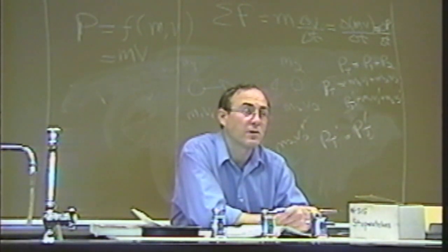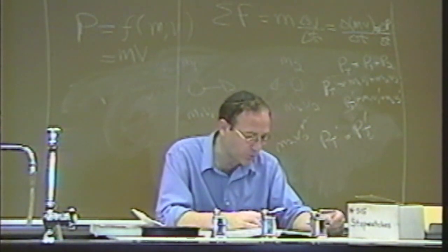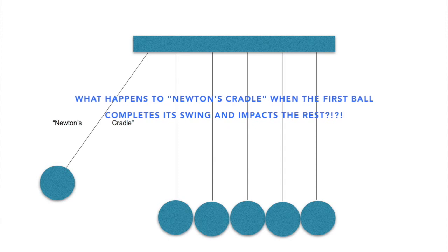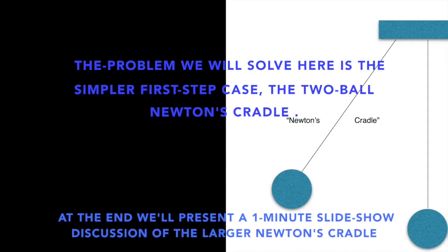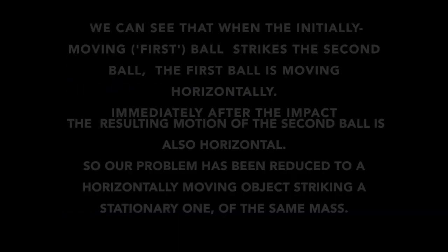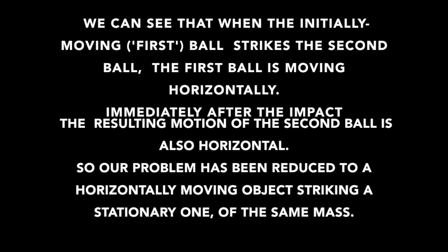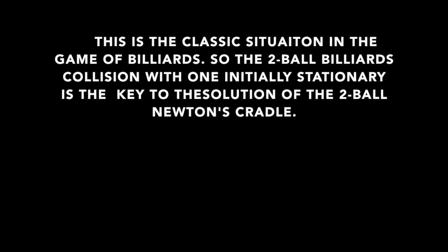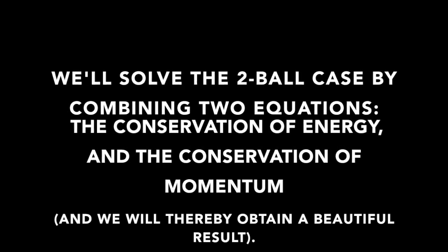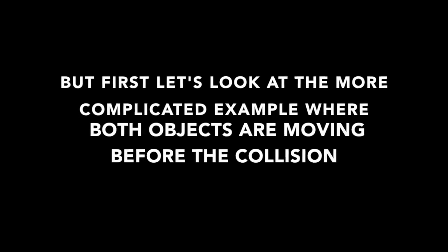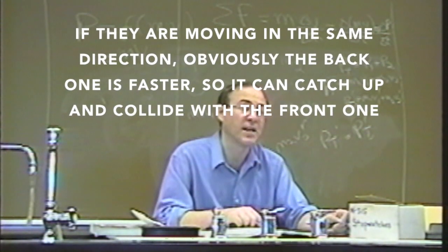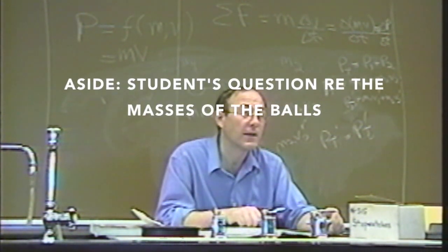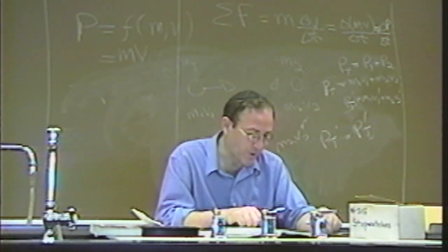We have conservation of momentum and conservation of energy - those two equations we discussed. Now what we're going to do is combine the two together, and it's actually really quite nice. We have two particles of mass m1 and m2 moving in the same direction; they collide with each other but keep on moving in the same direction. We haven't made any assumptions yet.